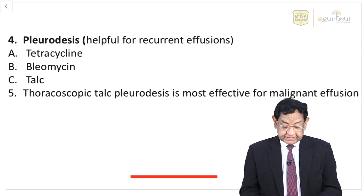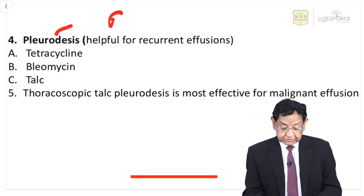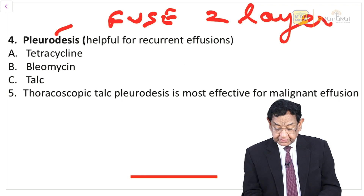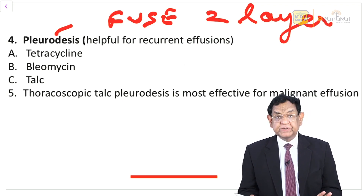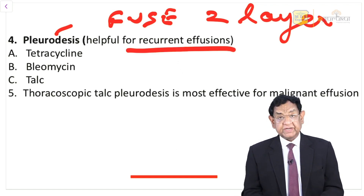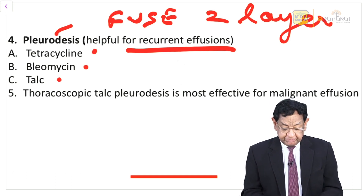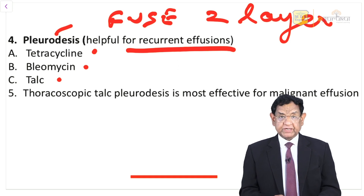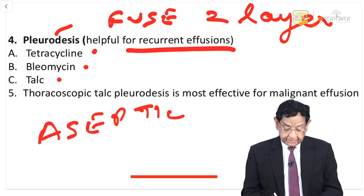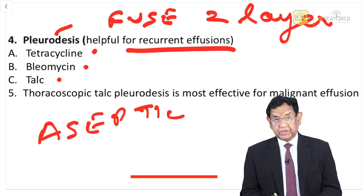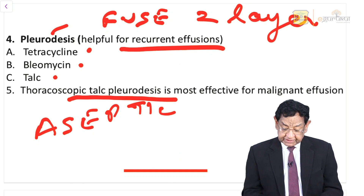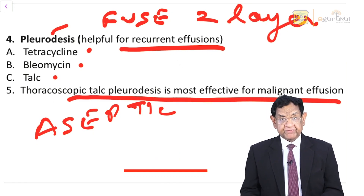Pleurodesis is a procedure to fuse the two layers of pleura — that means you are just removing the pleural space. This is done only for recurrent effusion. The materials we use are tetracycline, bleomycin, or plain talc. They cause aseptic inflammation, which causes fusion of the two layers of the pleura forever. Thoracoscopic talc pleurodesis is the most effective approach for malignant pleural effusion.